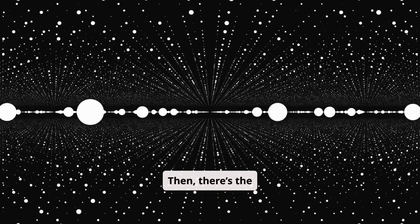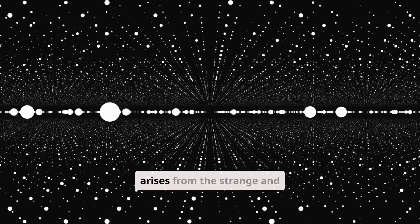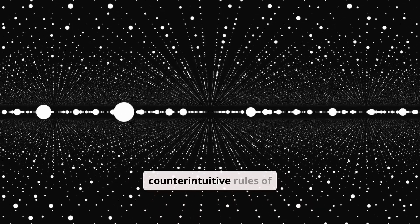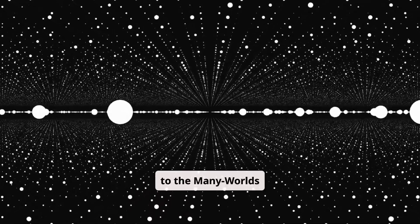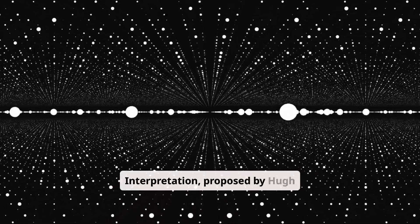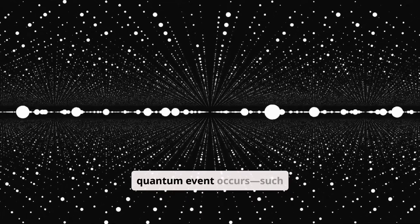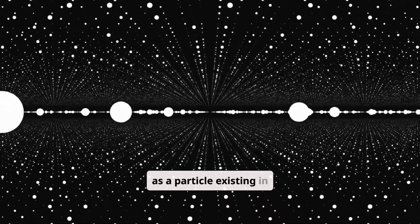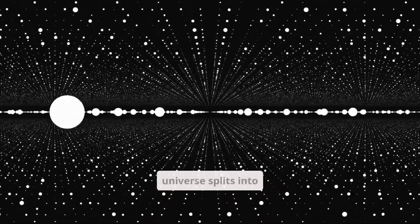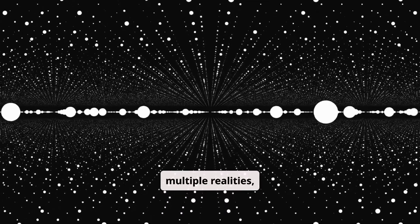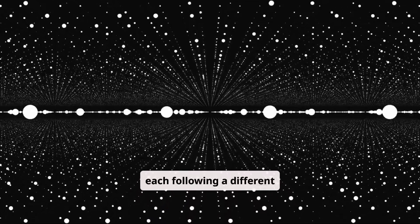Then there's the quantum multiverse, which arises from the strange and counterintuitive rules of quantum mechanics. According to the many-worlds interpretation proposed by Hugh Everett III in 1957, every time a quantum event occurs, such as a particle existing in two states at once, the universe splits into multiple realities, each following a different possible outcome.